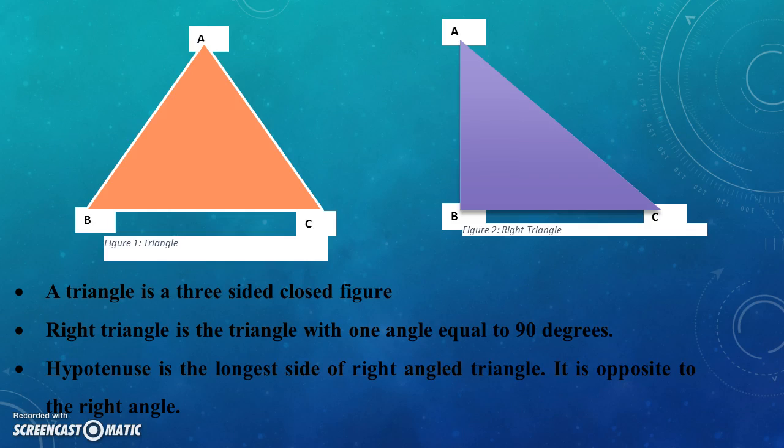Right triangle is the triangle with one right angle. The three sides in the right angle are base, perpendicular and hypotenuse. Hypotenuse is the longest side of the right triangle that is opposite to the right angle.